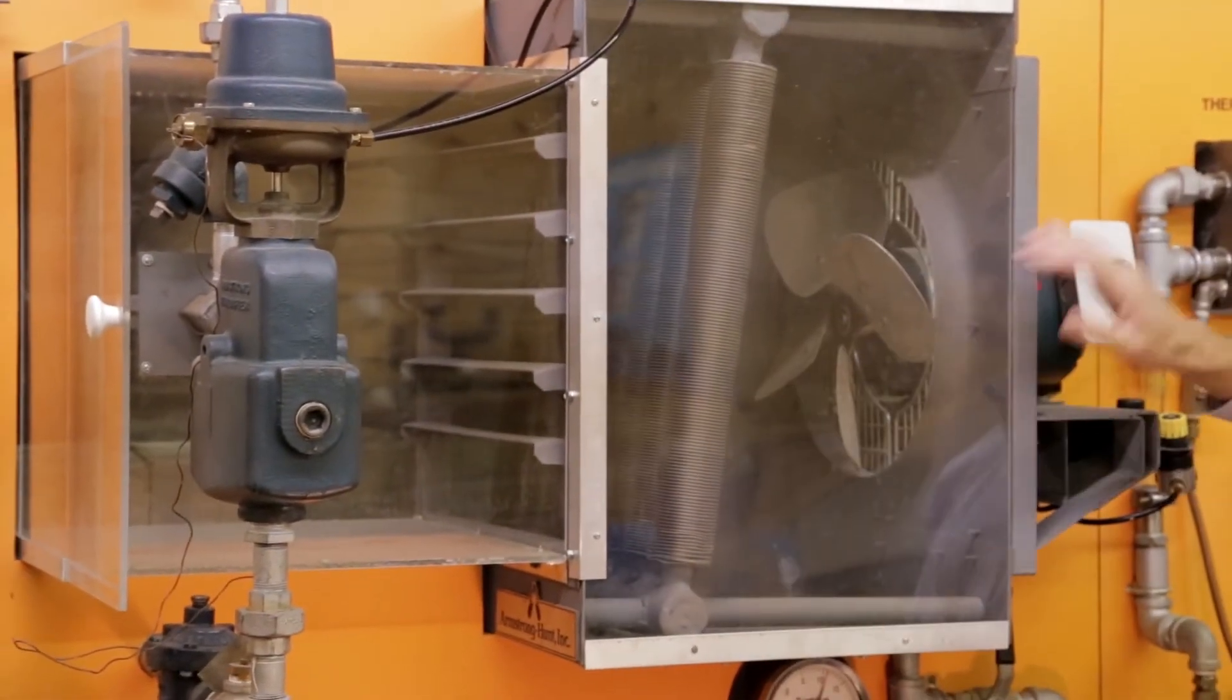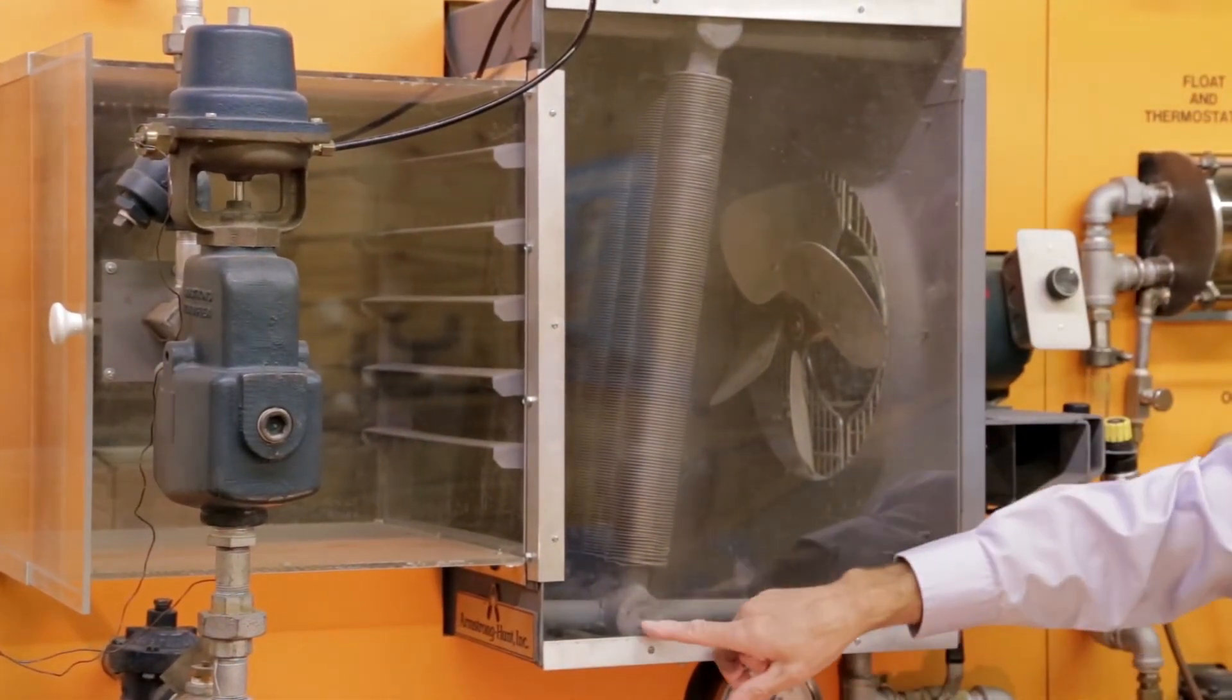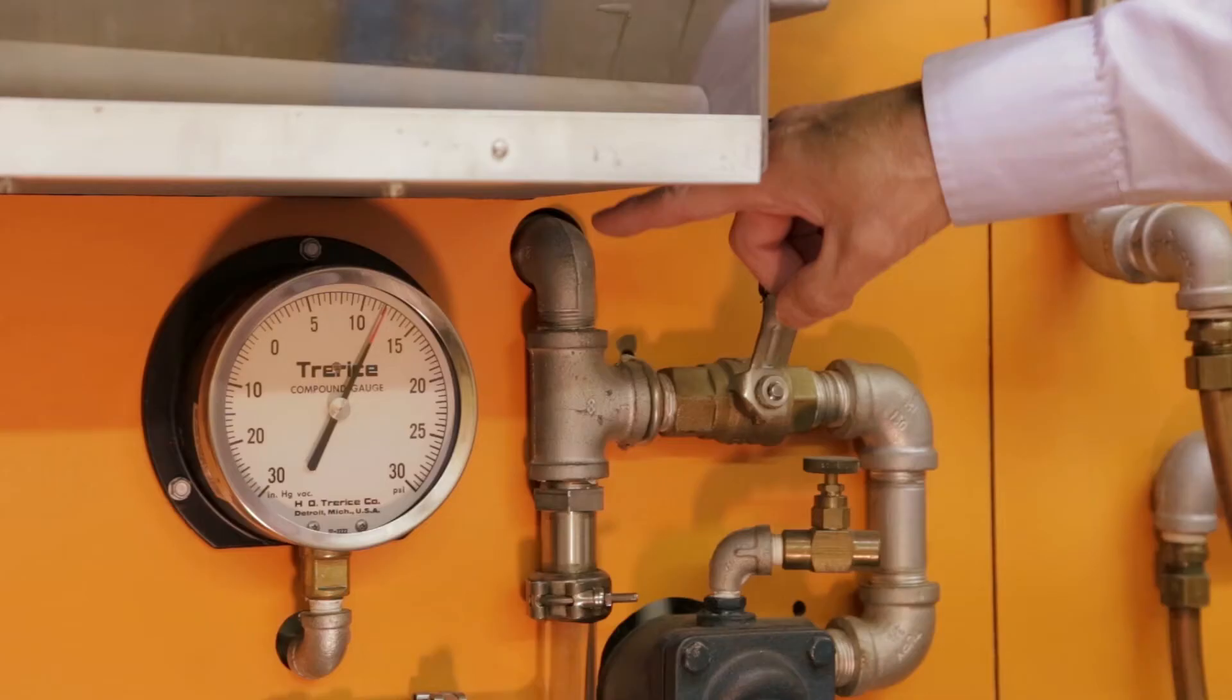From here, it's piped into the top of the coil. Here's our coil itself inside an air handler box with a fan, which will turn on in a bit. We've got a condensate header here, which comes down to our condensate connection.